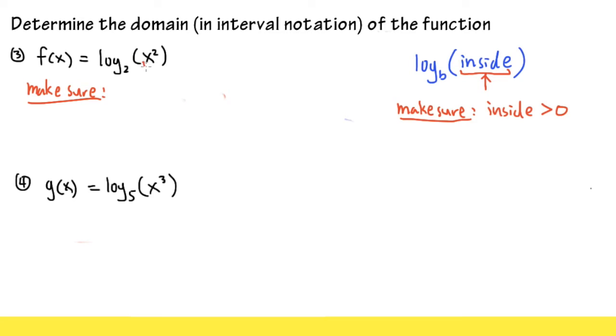The inside here is x squared. We have to make sure the inside is greater than zero. So we put down x squared is greater than zero.